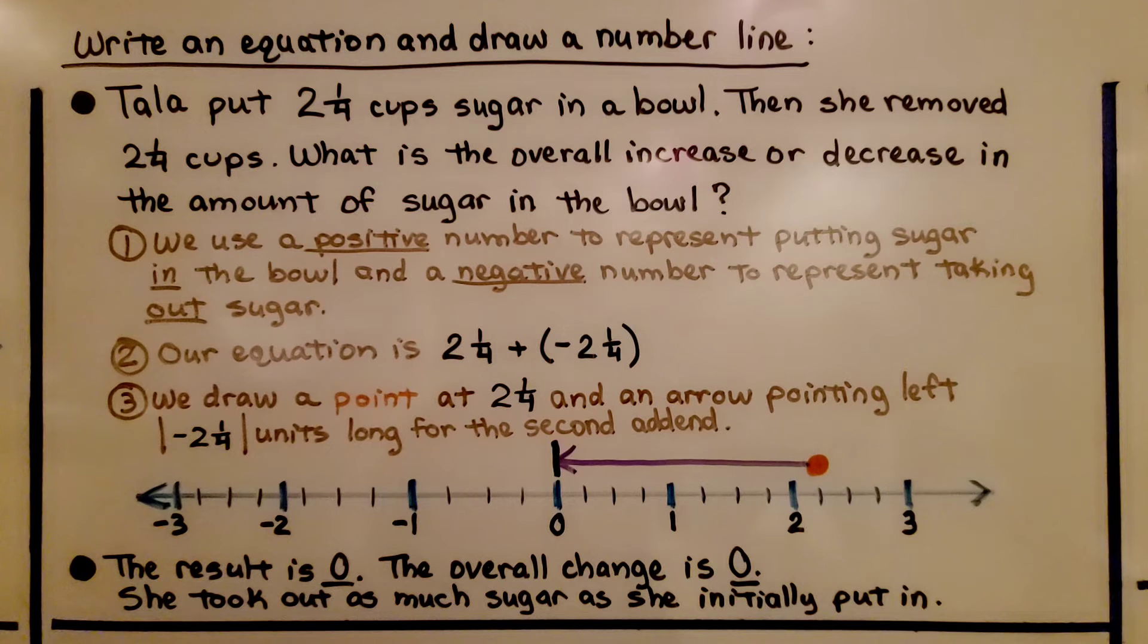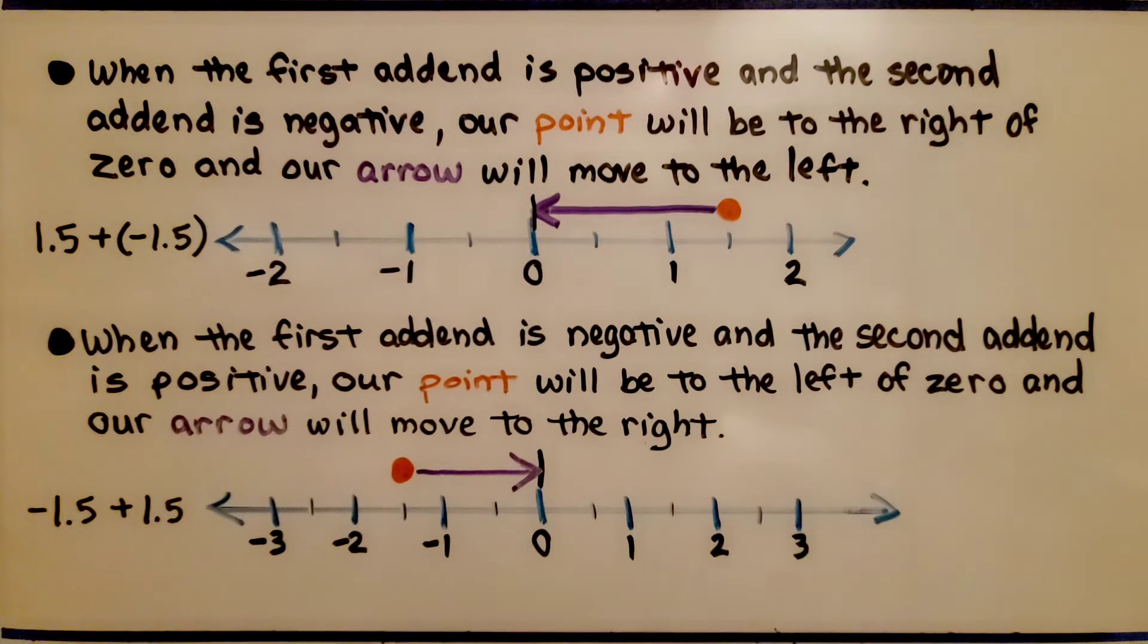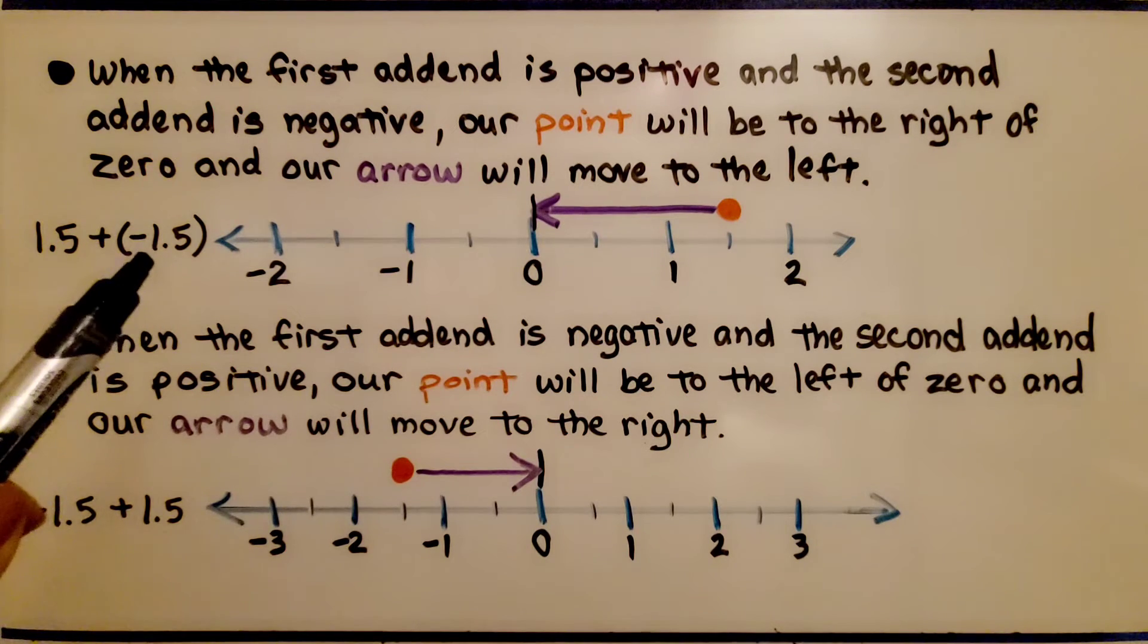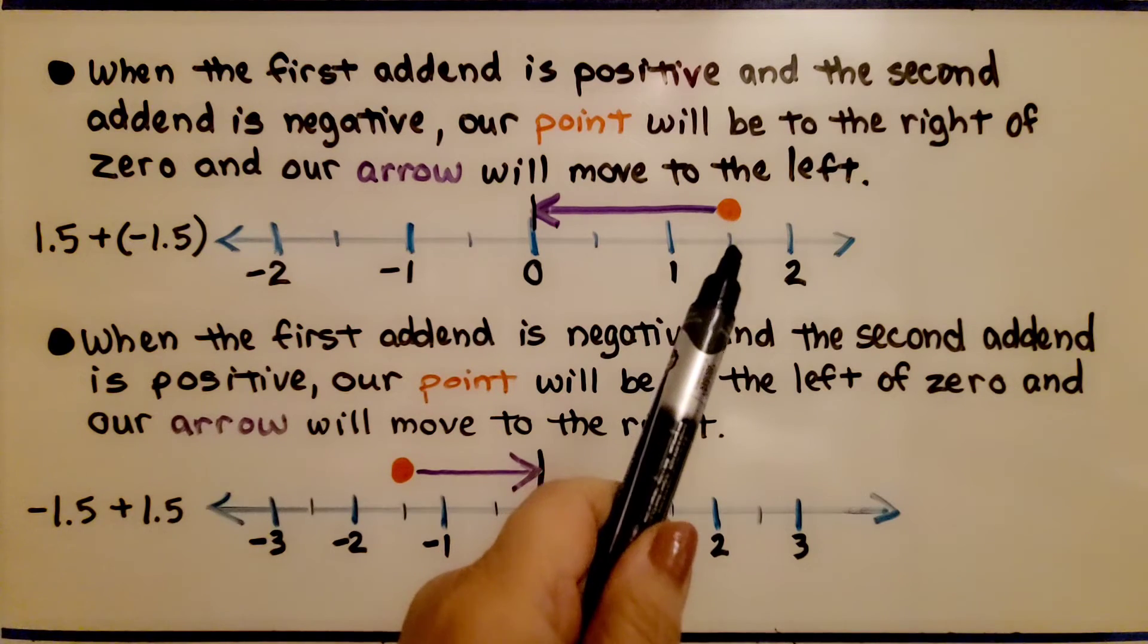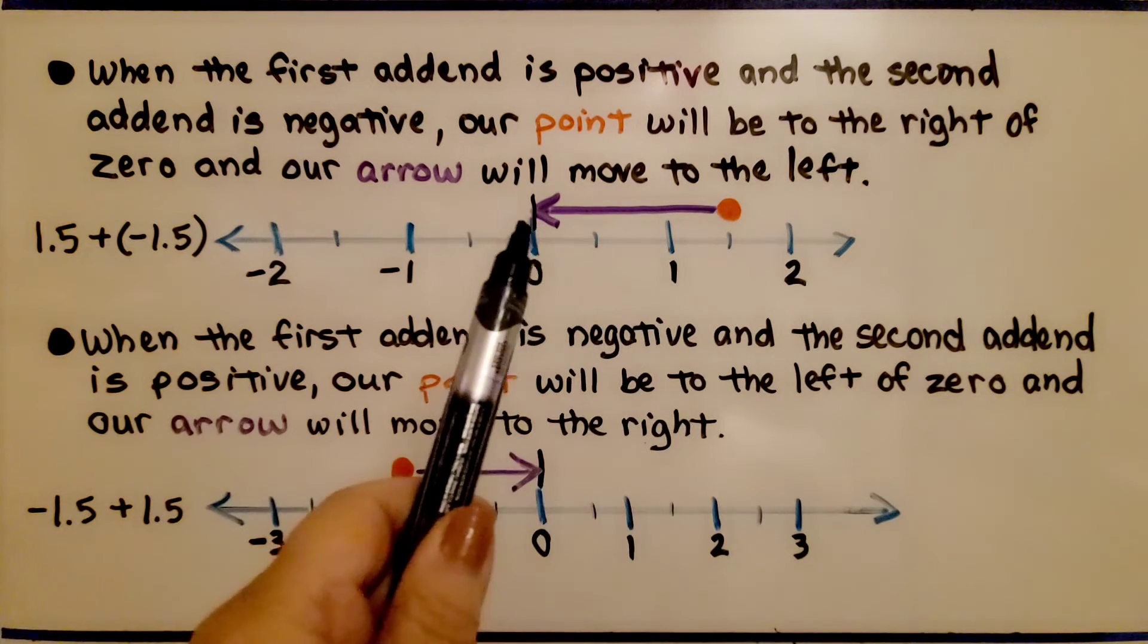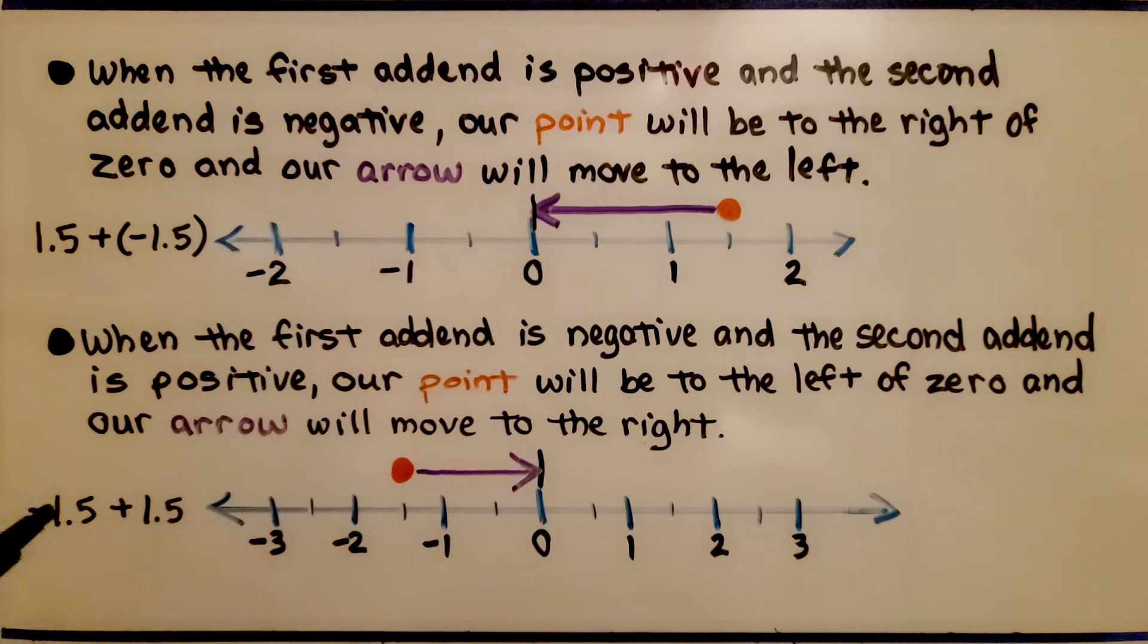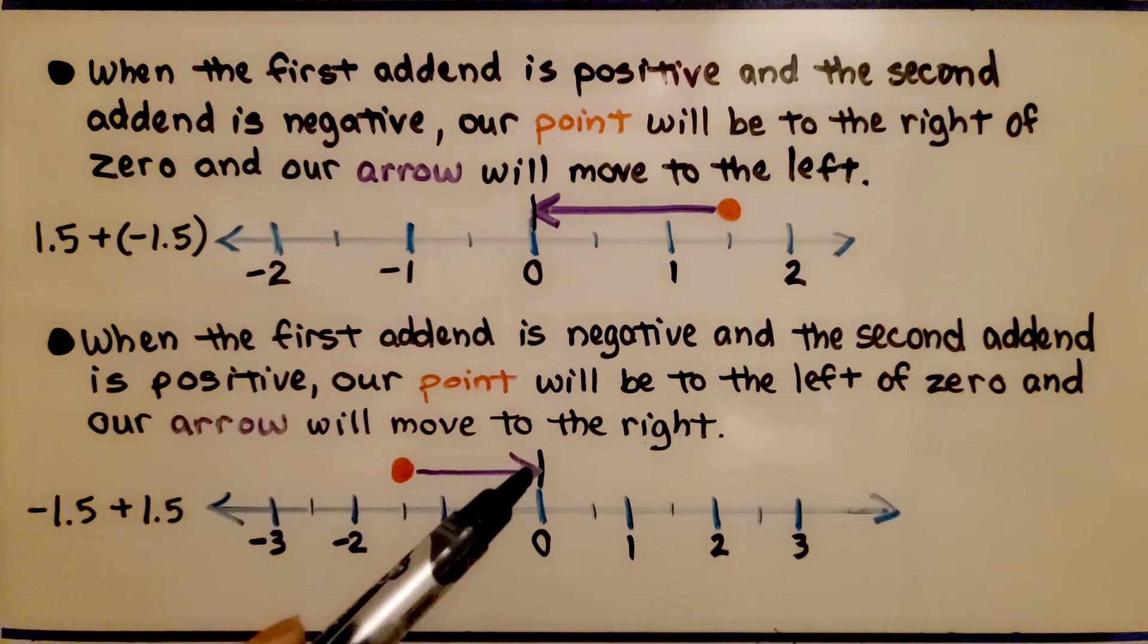When the first addend is positive and the second addend is negative, our point will be to the right of zero and our arrow will move to the left. When the first addend is negative and the second addend is positive, our point will be to the left of zero and our arrow will move to the right.